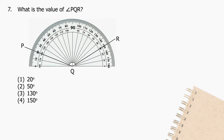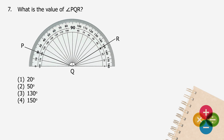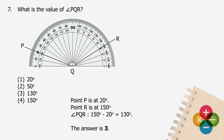Question 7: What is the value of angle PQR? Taking the measurement from the protractor, point P is at 20 degrees and point R is at 150 degrees. Angle PQR will be 150 degrees minus 20 degrees, and the difference is 130 degrees. The answer is 3.